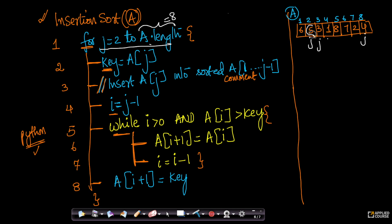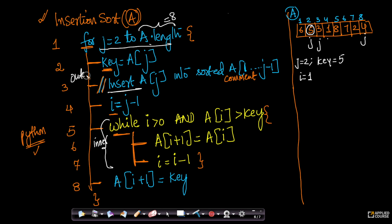When j equals 2, my key becomes A[j], which is A[2] = 5. The comment line will not be executed. Then i is set to j - 1, which is 1. Now we go to the inner while loop. While i is greater than 0 AND A[i] is greater than key — when j=2, i=1, so A[1] = 6. Is i greater than 0? Yes. Is A[i] greater than key? Yes, because A[1] = 6 and key = 5.